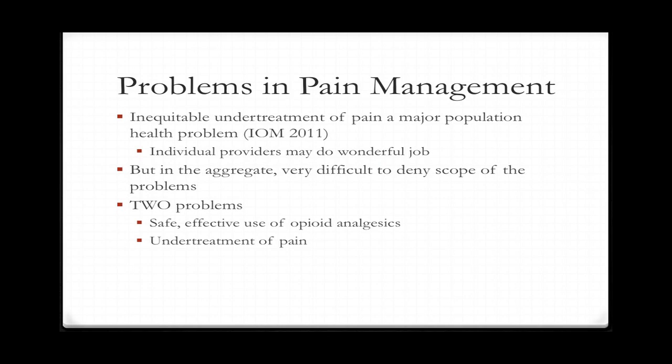When we talk about pain, one of the first things everybody wants to talk about is opium. I'm not going to be talking much about that today. There are really two public health problems: the safe and effective use of opioid analgesics, and the undertreatment of pain. For a very long time we have proceeded as if these are the same problem, but I think they are related but distinct problems.